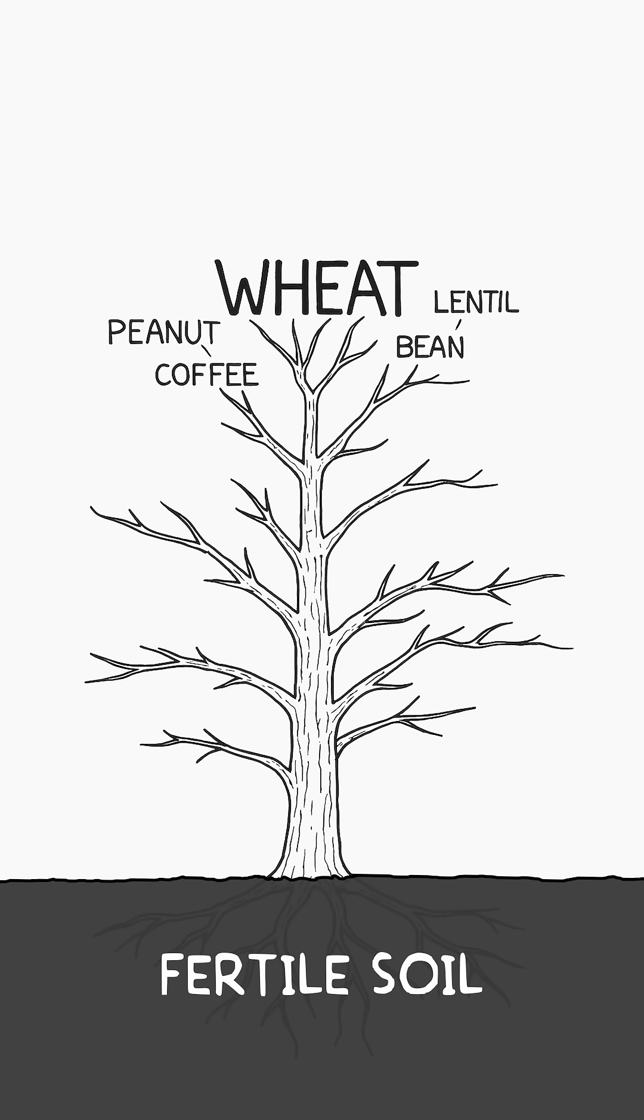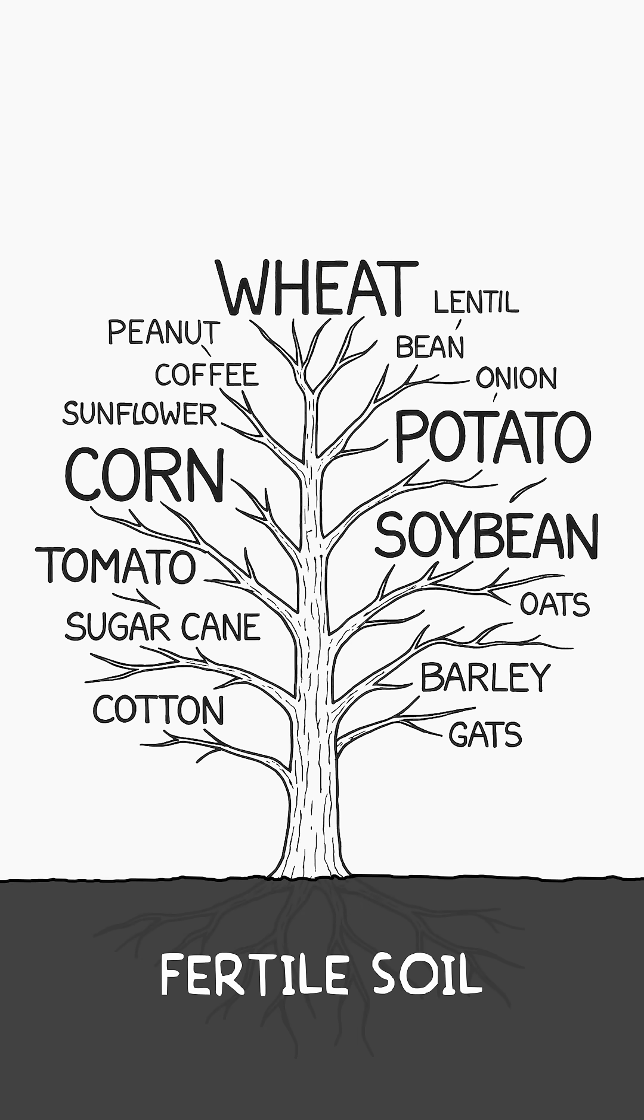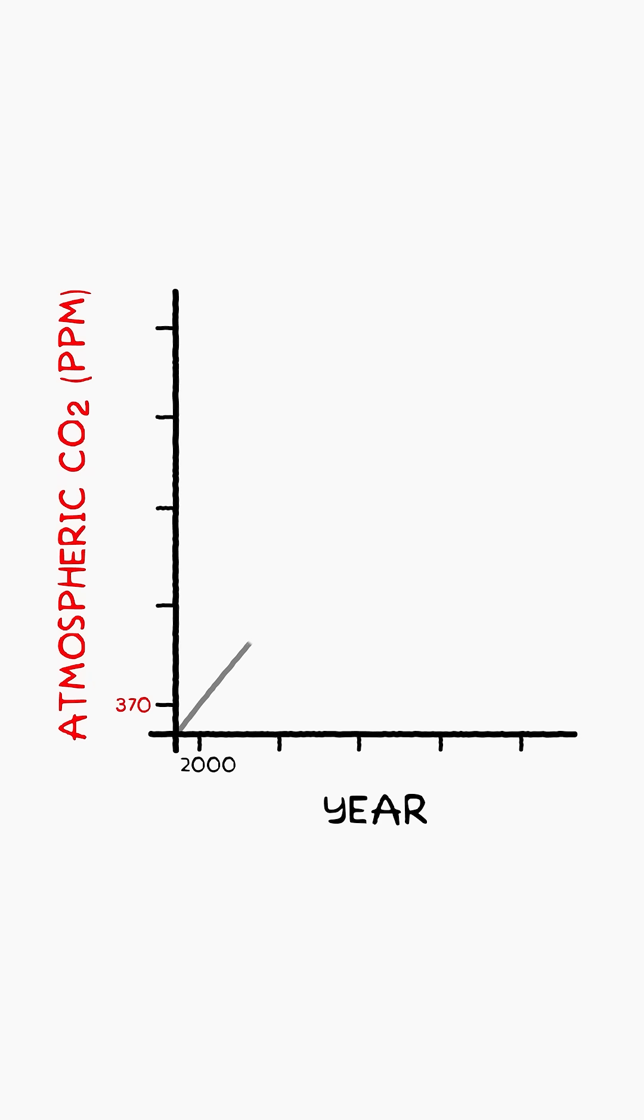Almost all our food comes from plants that need a stable climate and CO2 levels around 420 parts per million. If greenhouse gas emissions don't drop, CO2 will exceed 800 parts per million by 2100.